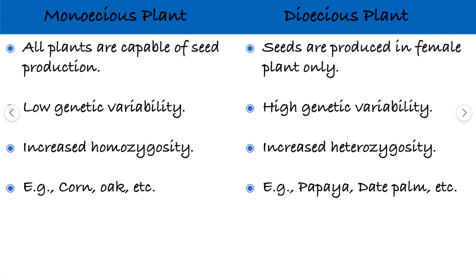Next point: monoecious plants are capable of producing seeds. All monoecious plants are capable of seed production, because female flowers are present in every individual plant. But in case of dioecious plants, seeds are only produced by female plants, because male and female plants are separate.